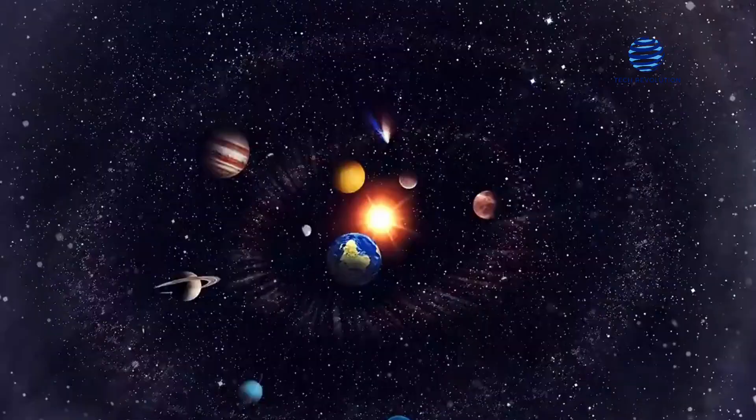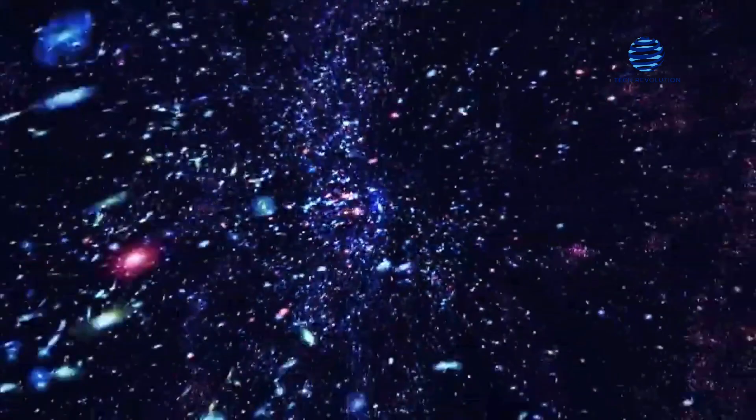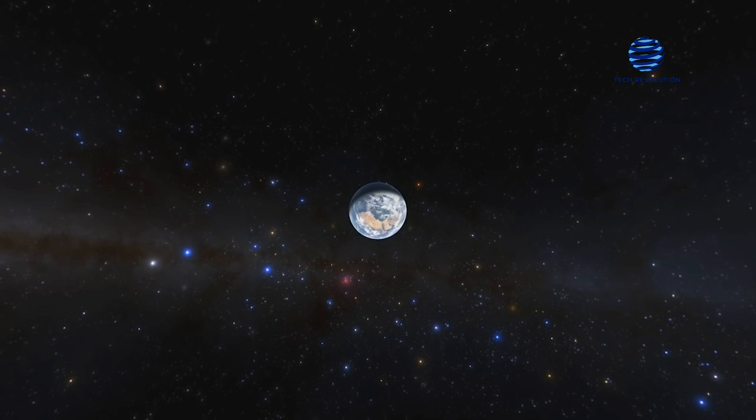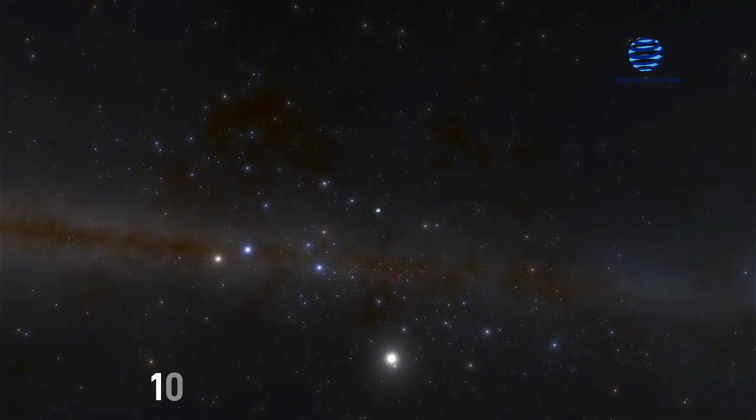But statistically speaking, there should be many more. According to the Planetary Society, the cosmos may contain more than 100 billion galaxies, each with hundreds of billions of stars. There may be billions of trillions of exoplanets out there if most stars have one or more planets orbiting them.